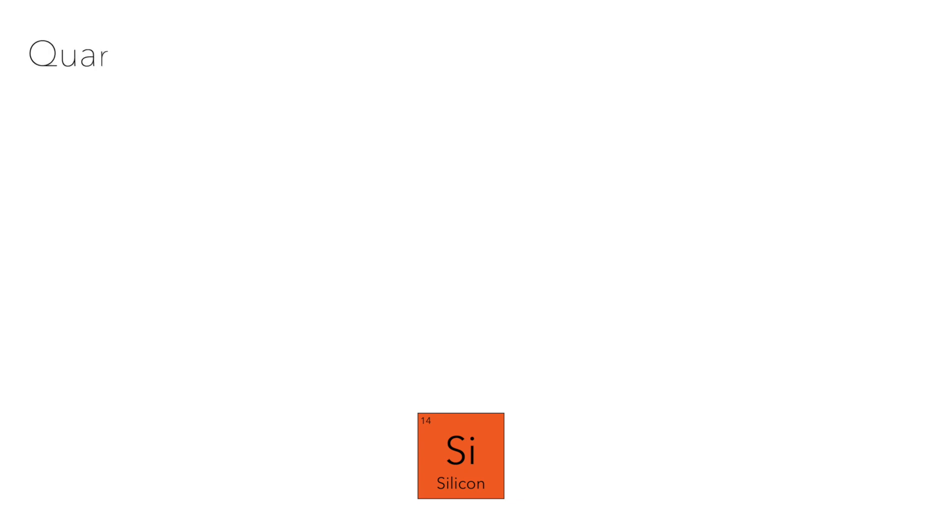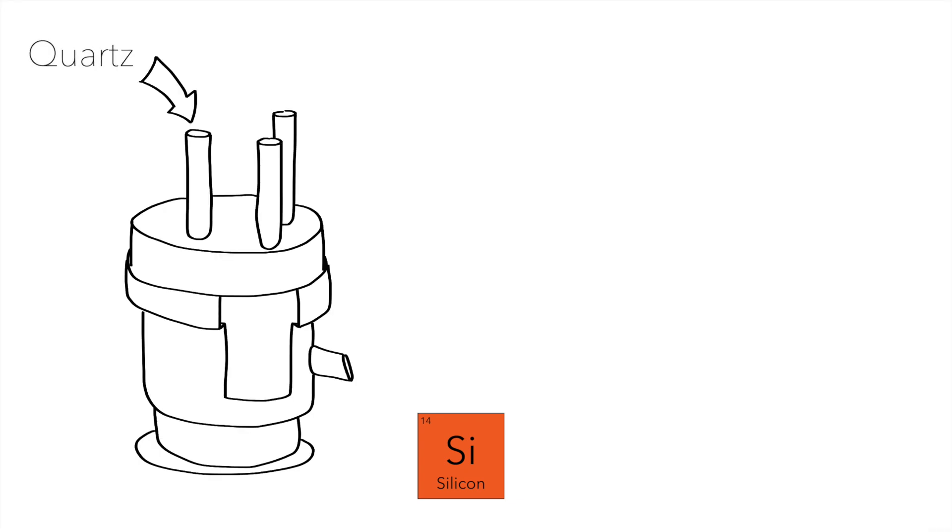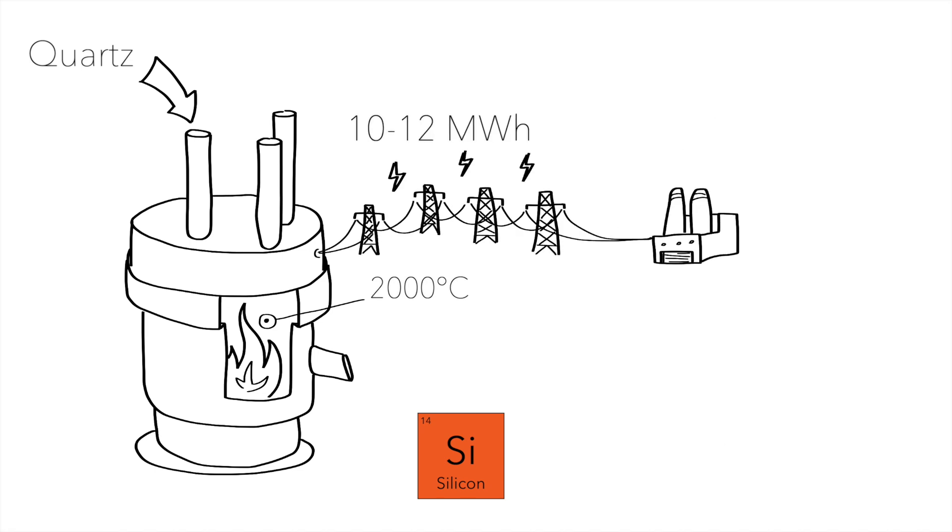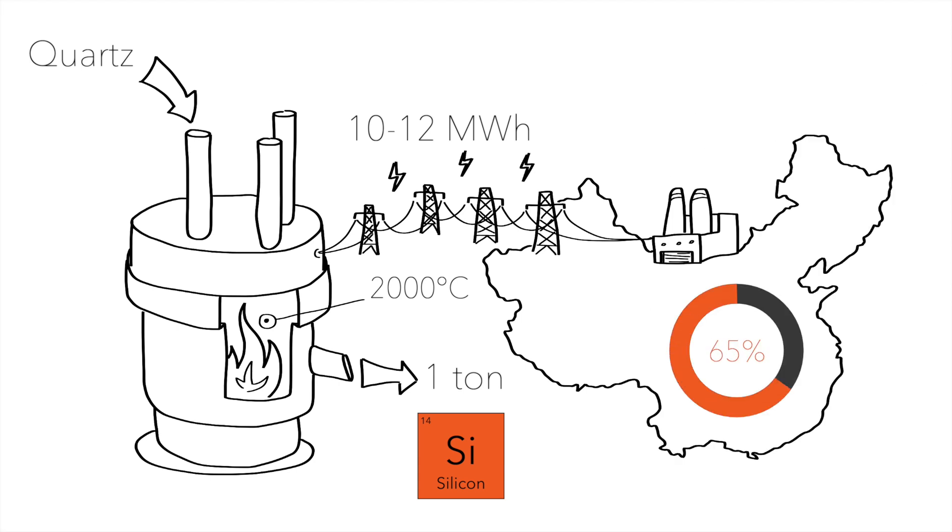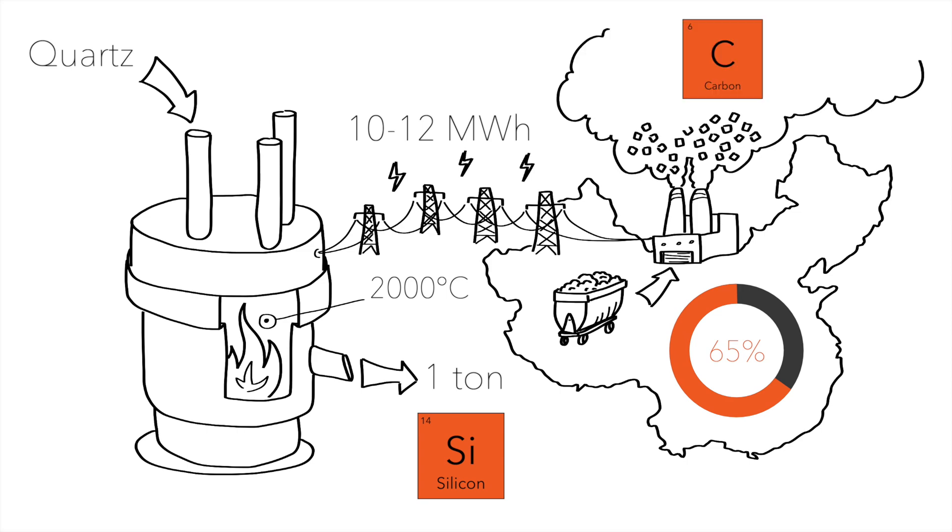Let's go back to our silicon that was not an issue from a concentration perspective. It is made by heating quartz in an industrial furnace at 2000 degrees Celsius, and it takes 10 to 12 megawatt-hours to create a ton of silicon. China is the largest producer of silicon and 65% of China's energy comes from coal, the burning of which releases significant carbon into the atmosphere and contributes to climate change.